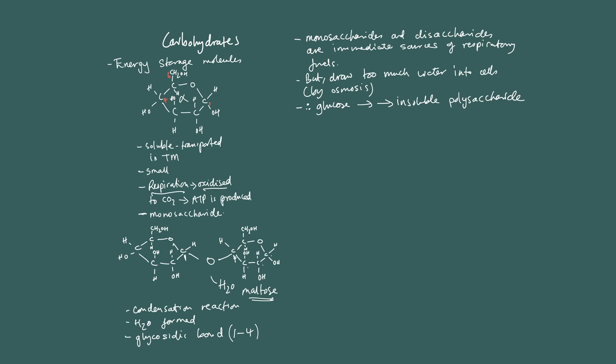So what you need to do is convert these soluble molecules into large insoluble molecules, i.e. polysaccharides. The same principle applies though. The idea is that monosaccharides and disaccharides are immediate sources of, let's call them respiratory fuels, so they are good for putting into respiration, but draw too much water into cells by osmosis. So you can't have lots of glucose sitting around.